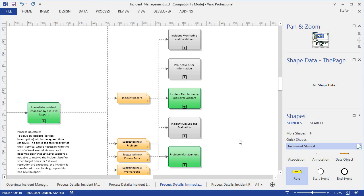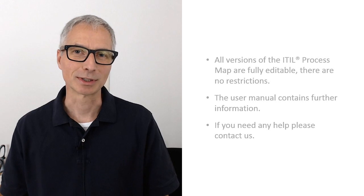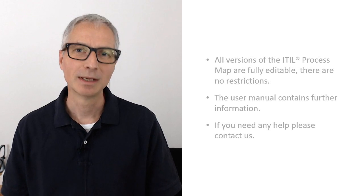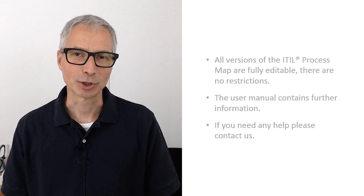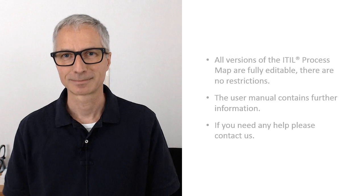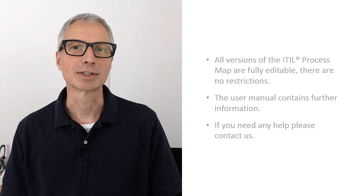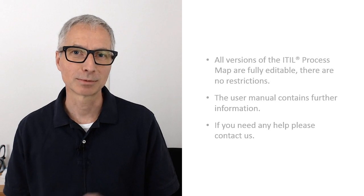There is a second option to update the diagrams if there were many changes in the repository. If you click on Refresh File, this will update all the shapes in the currently open Visio file in one go. These examples demonstrate that the ITIL Process Map is completely flexible when it comes to adapting it to the needs of your organization. This applies to the Visio version of the ITIL model, but also to all other platforms, such as iGrafx and Ares. Our process model contains a user manual with further information, and you can also get in touch with us if you need any help.